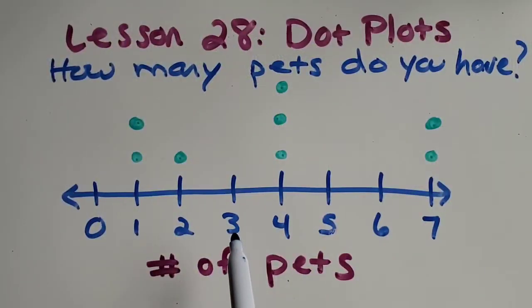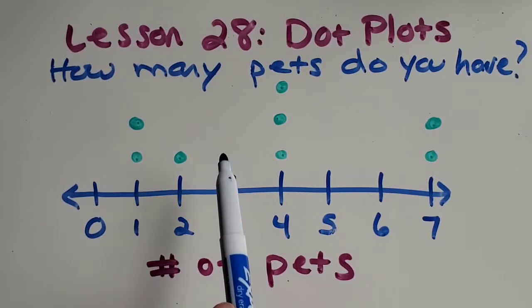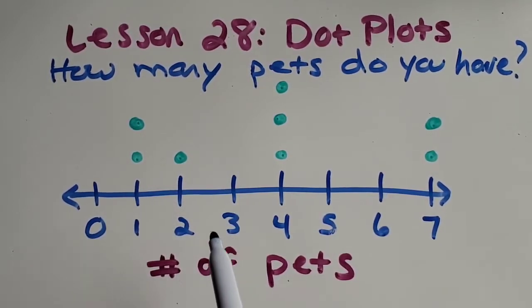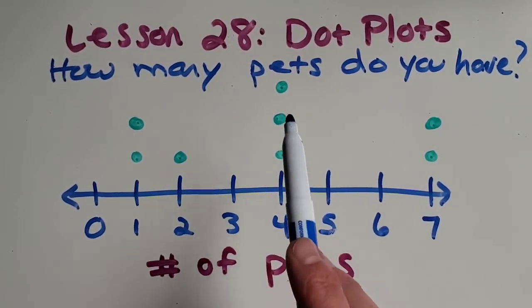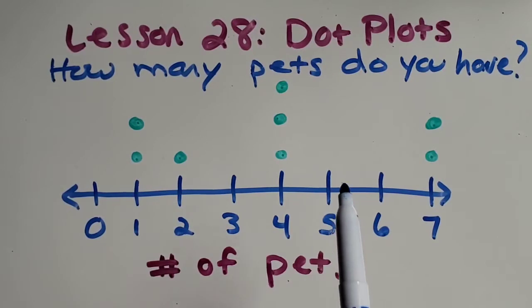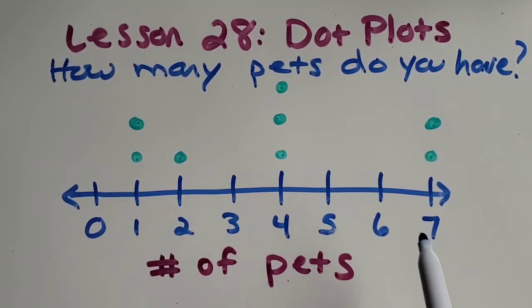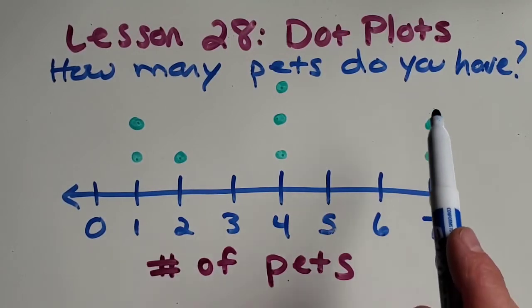How about three pets? Oh, there's no dot, so that's zero people had that. How about four pets? Okay, one, two, three people. Five and six again have zero. And then seven pets, there are two people.